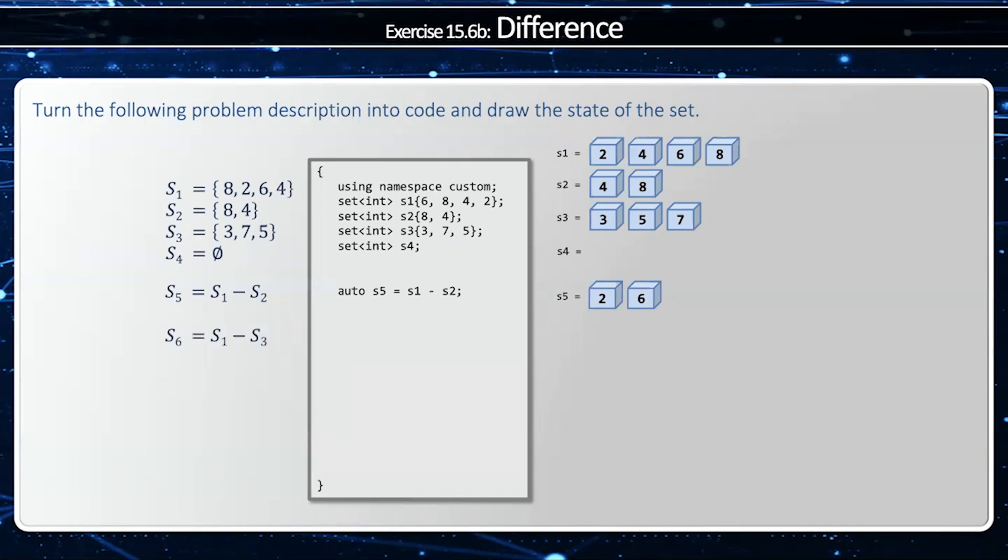S1 minus S3 are disjoint, so I'm going to remove 3, 5, and 7 from 2, 4, 6, 8. 3, 5, and 7 are not in 2, 4, 6, 8. That gives me the same elements I had before.